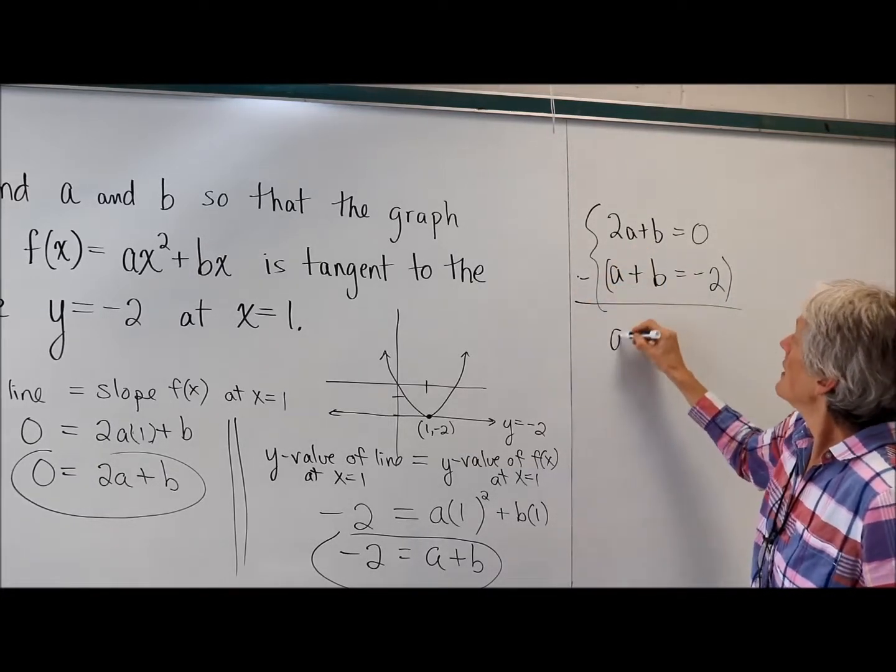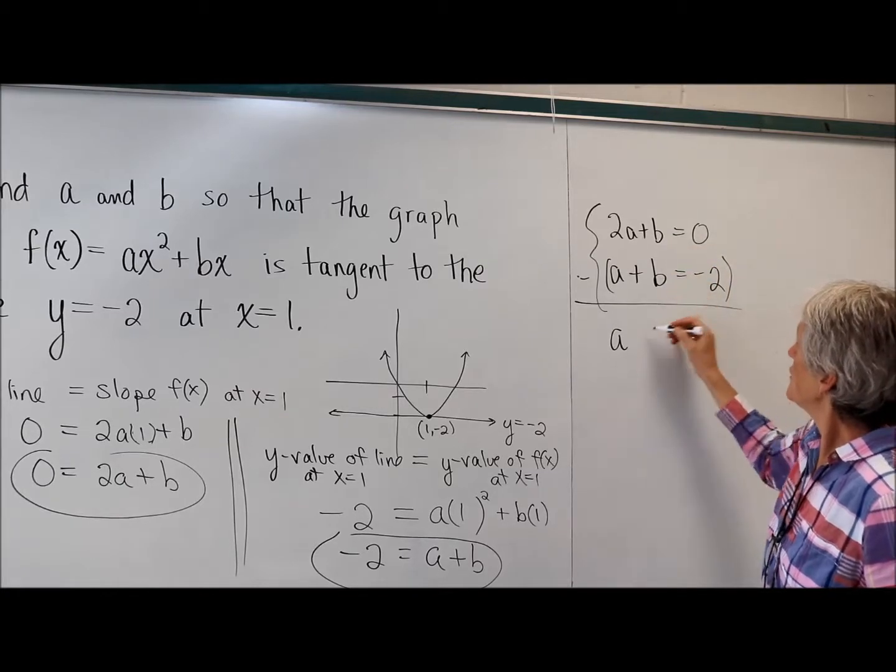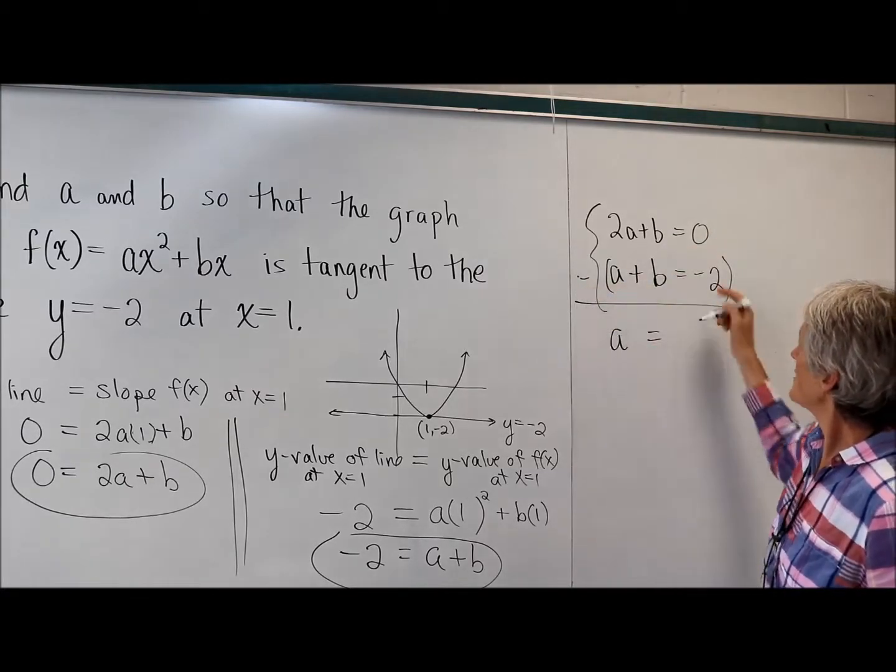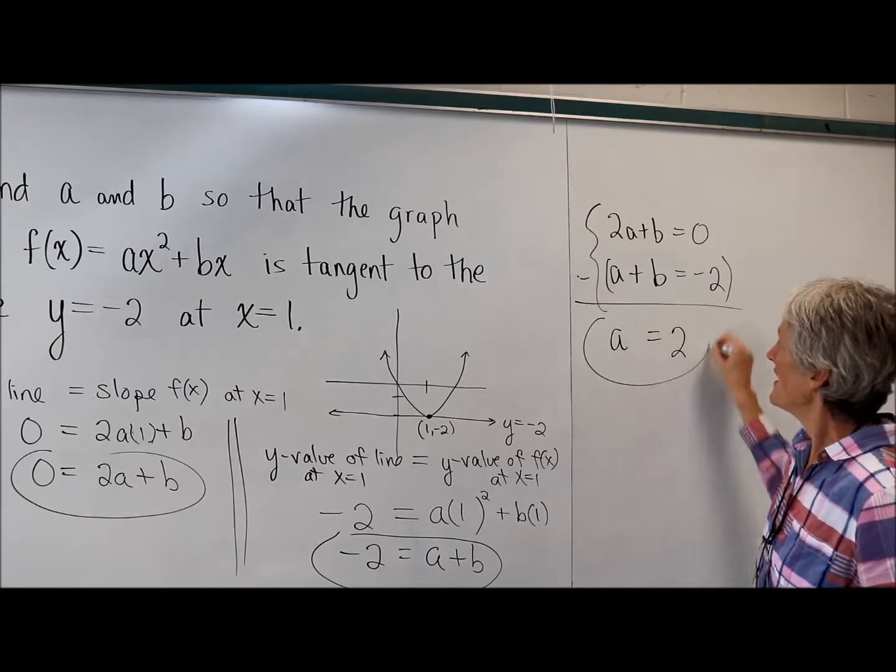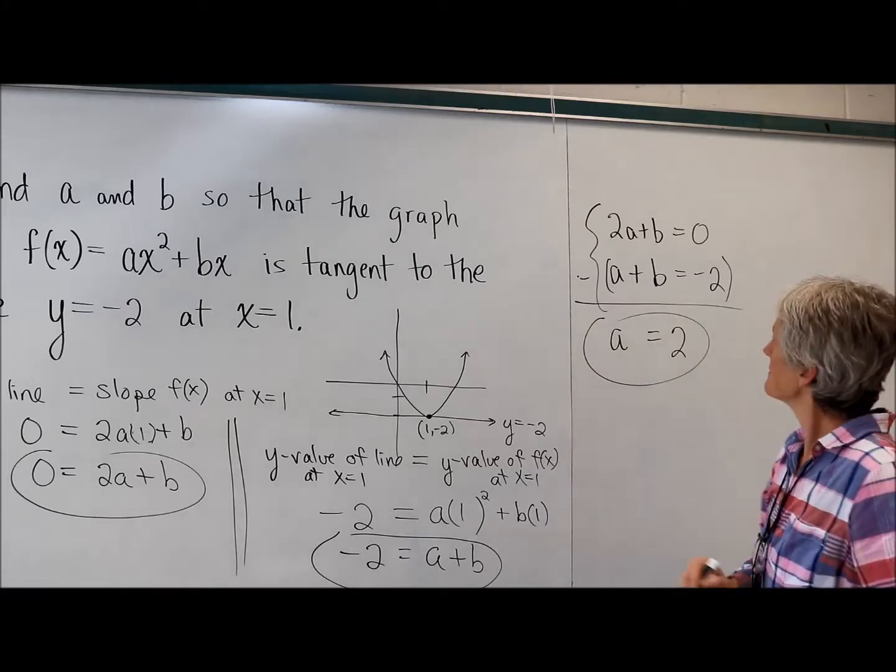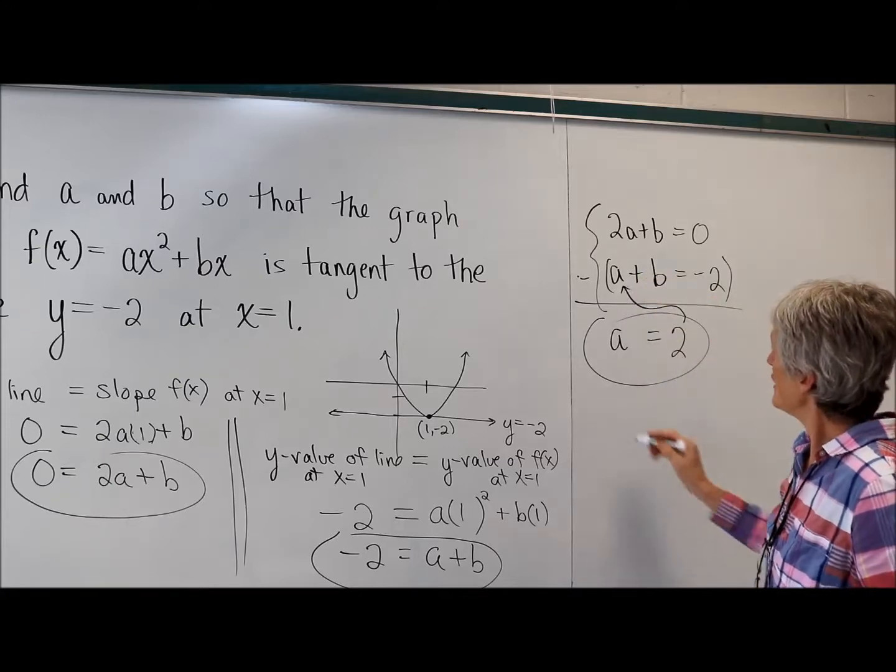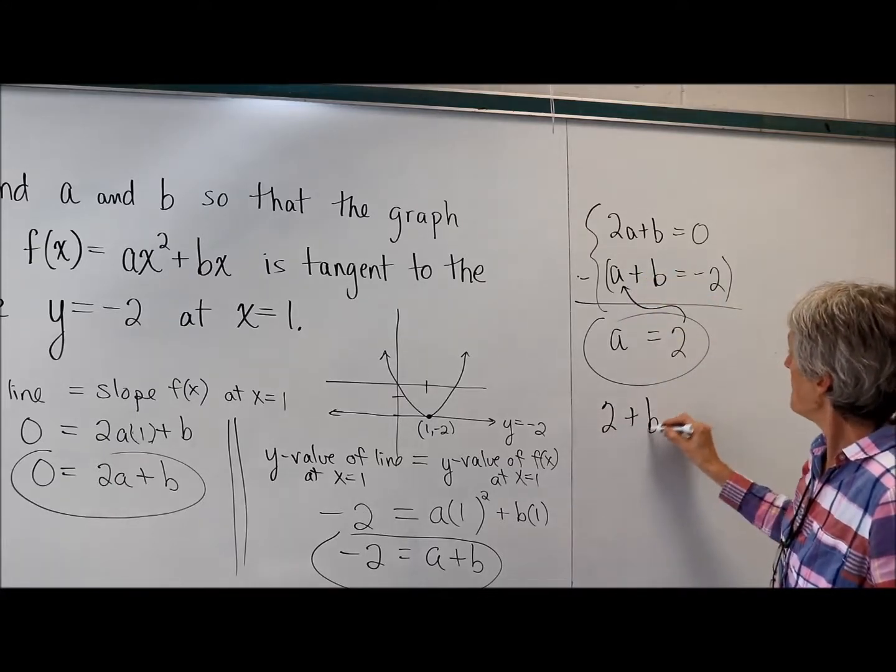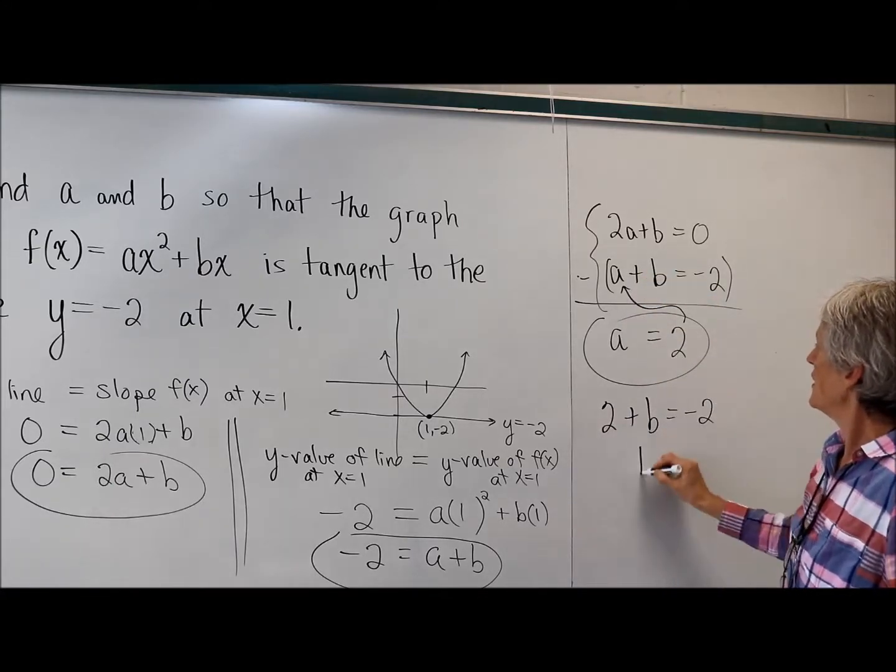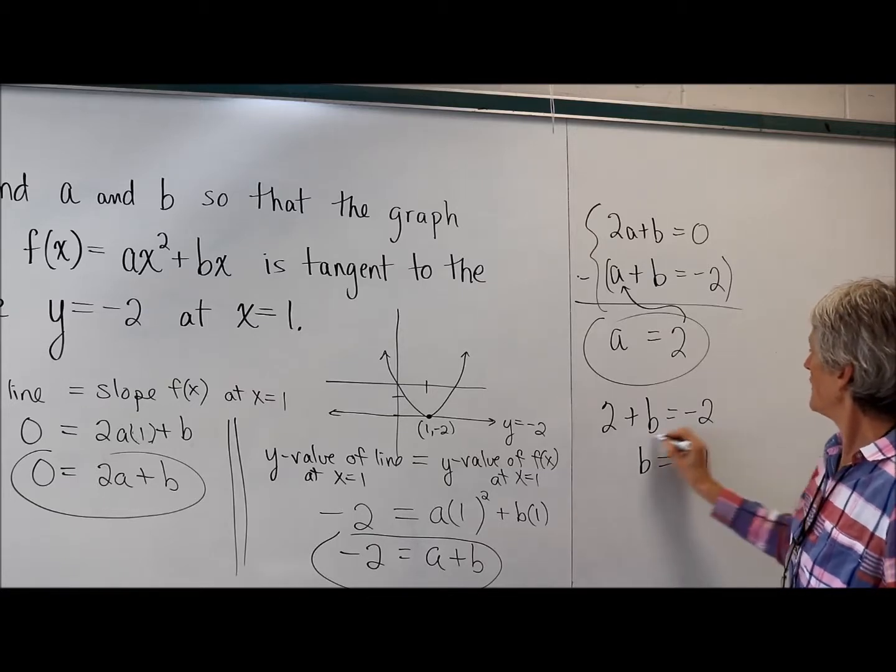2a minus a is a, b minus b is 0, 0 minus negative 2 is 2. I have found one of my solutions. I can substitute that 2 back into either equation. 2 plus b equals negative 2. So b is going to equal negative 4.